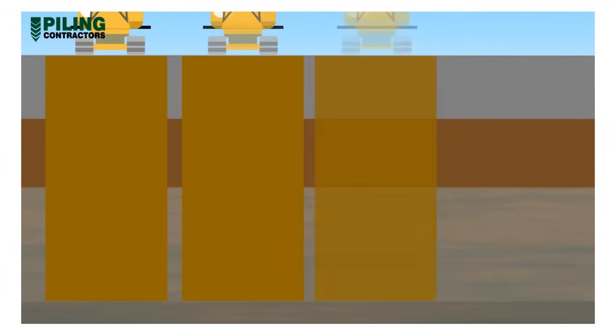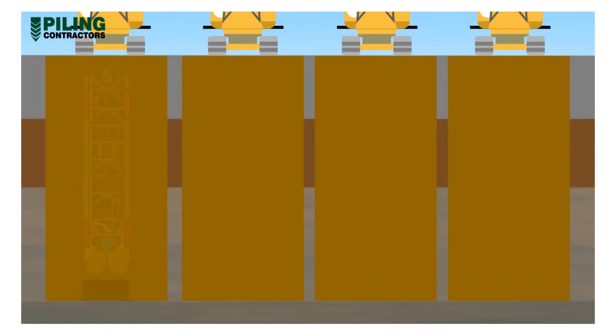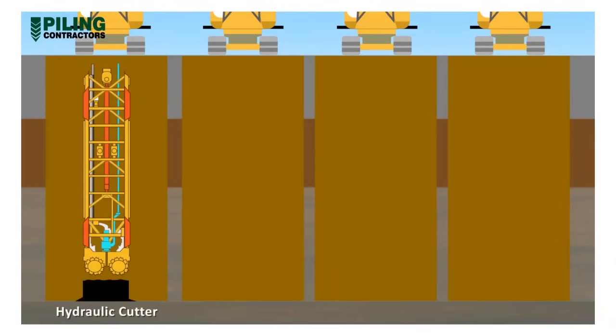Diaphragm wall panels can be excavated using several types of equipment, including hydraulic cutters. These are powerful machines, capable of excavating into hard rock, but require large bentonite plants and large cranes to hold the cutter. Steering mechanisms are built into the grab body to provide a high degree of verticality control.